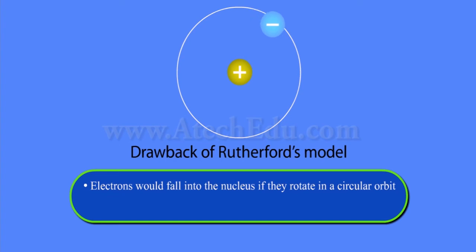In this case, the atom should be highly unstable and hence matter should not exist in the present form. But we know that atoms are quite stable. Electrons would fall into the nucleus if they rotate in a circular orbit. Atoms are unstable.